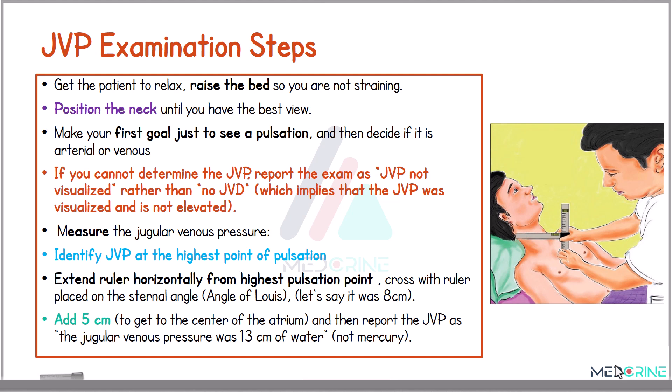To measure the jugular venous pressure, locate the top of the venous pulsation, extend a ruler horizontally from that point, and another one vertically from the sternal angle, or the angle of Louis. Add 5 cm to the approximate height of your measurement. For example, a pulsation at 8 cm above the sternal angle corresponds to a jugular venous pressure of 13 — that is, after adding 5 to 8.